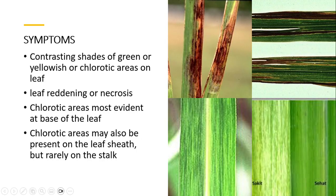What are the symptoms of this disease? Symptoms are most evident at the base of the leaves, where yellow areas are more prominent. Chlorotic areas may also be present on the leaf sheaths, but are rarely found on the stalks — if present on stalks, they are very limited, whereas they are more common on the leaf sheaths.